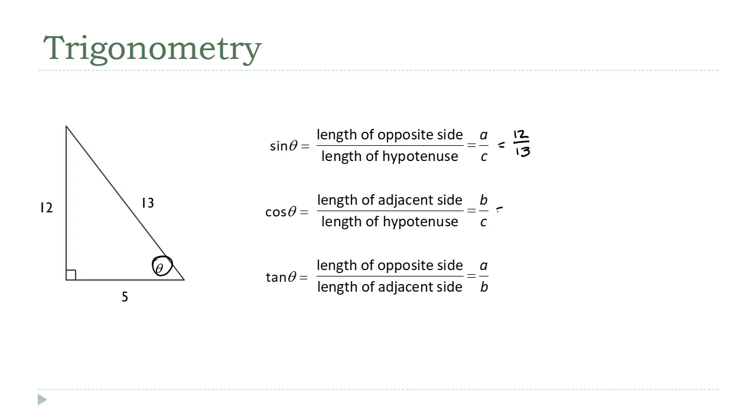We can do this again down here. The cosine is going to be the adjacent side length. That's 5 over 13. And then finally, the tangent, that's the opposite side divided by the adjacent side. That is 12 fifths. There's our three values, the actual numeric values for this specific triangle.